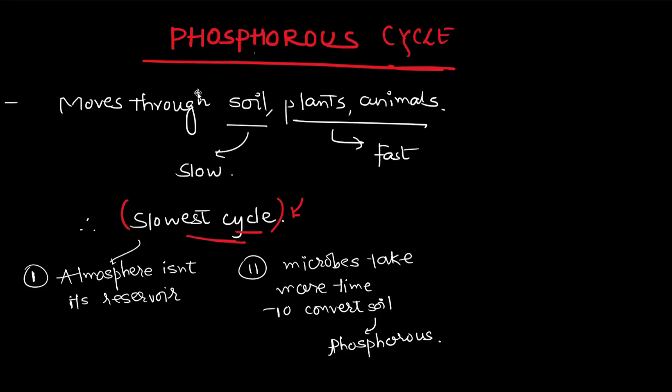Hello and welcome to another video of the series in which we are trying to comprehensively cover environmental science for civil services examinations and various other government examinations. Today's topic is the phosphorus cycle. Phosphorus moves through soil, plants, and animals — slowly through the soil but quickly through plants and animals.